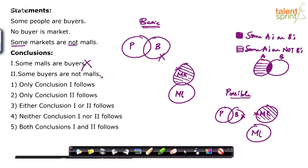Look at conclusion 2: some buyers are not malls. In the basic diagram, buyers are separate from malls, so I can say all these buyers are not malls. The conclusion says 'some buyers are not malls' — I can choose this section of buyers and say these are not malls. So some buyers are not malls satisfies the basic diagram.